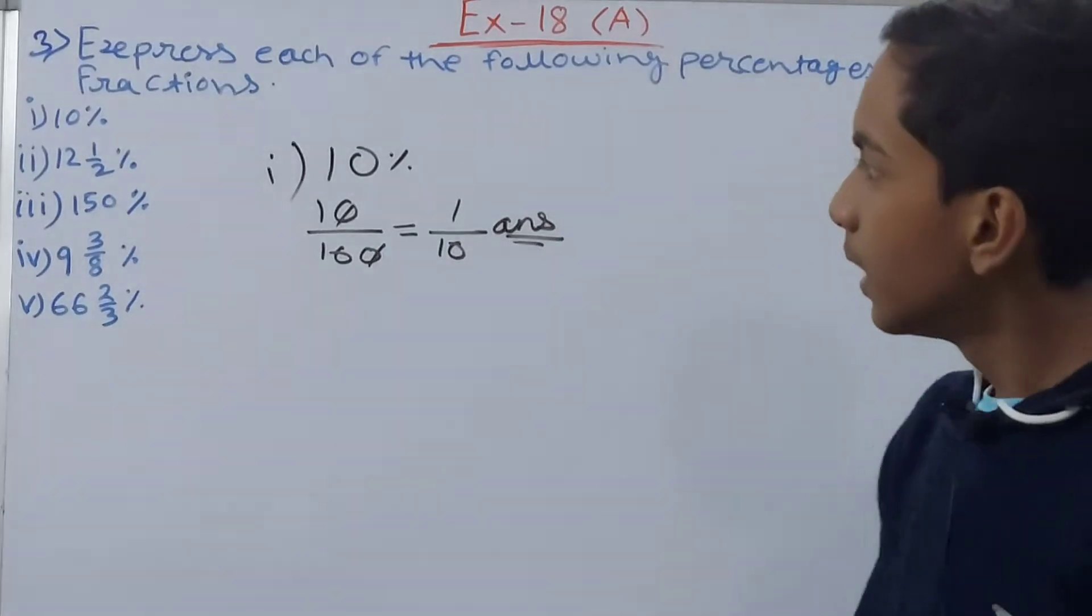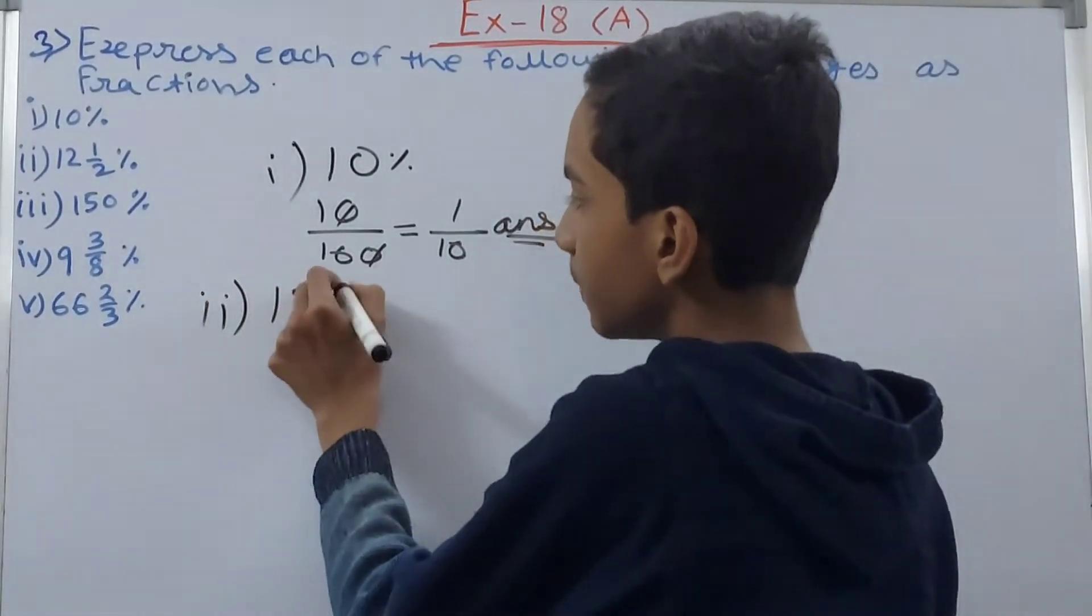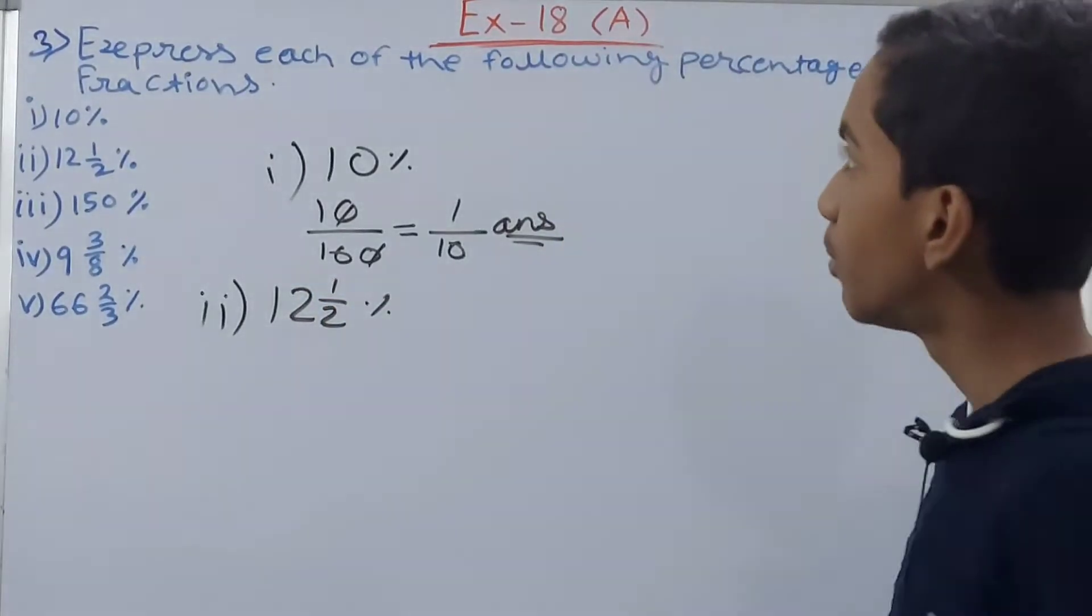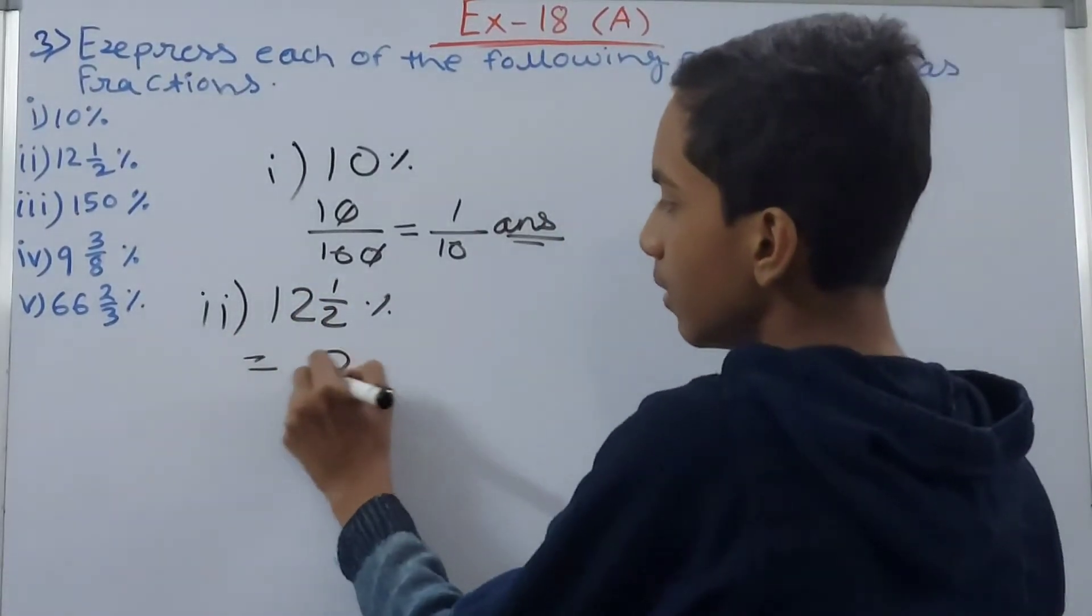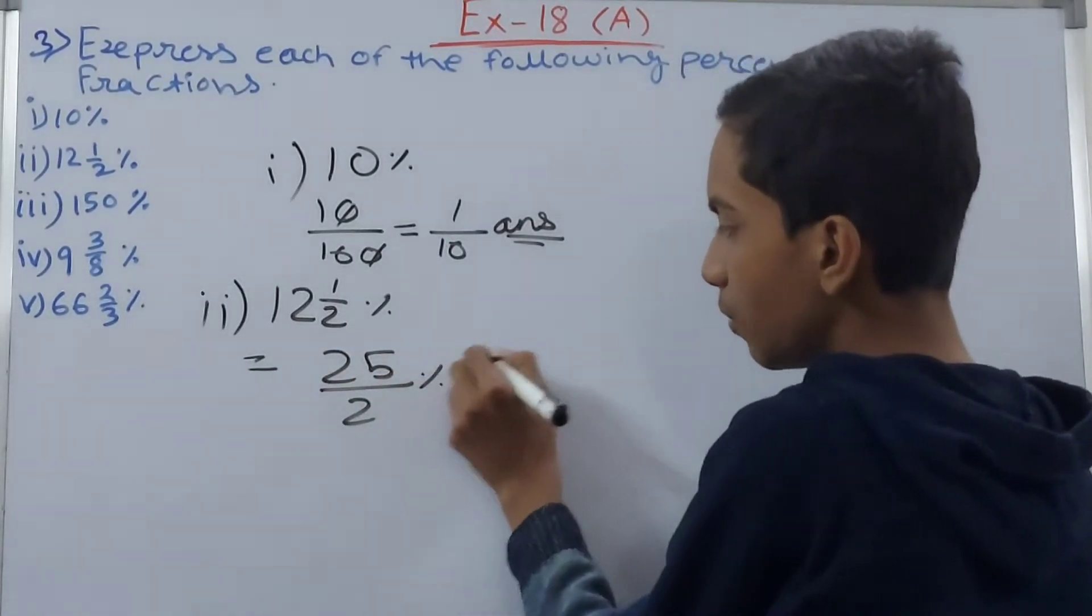Next one we have 12 whole 1 upon 2 percent. First of all convert the mixed fraction to the improper, so we get here 25 upon 2 percent. Now divide 25 upon 2 by 100.